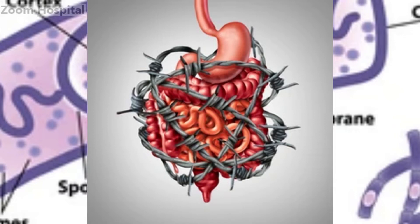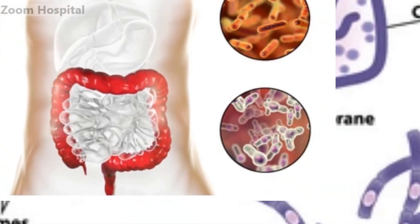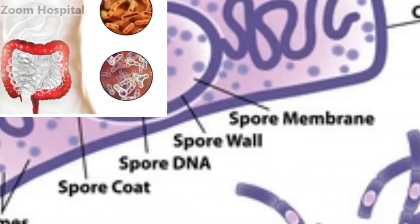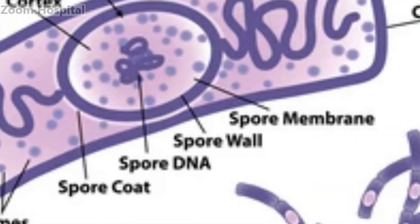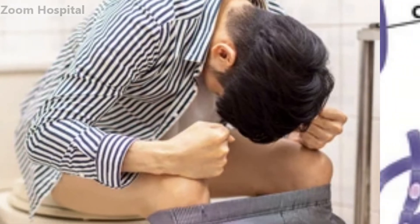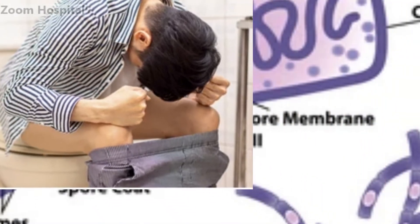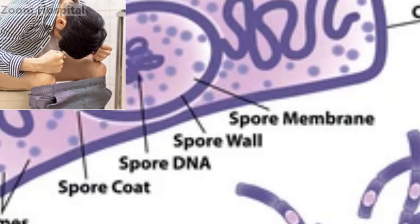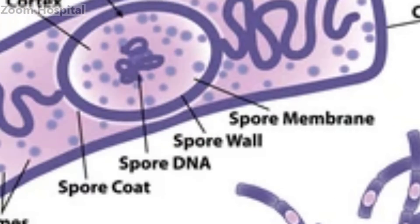3. Gastrointestinal anthrax. This form of anthrax occurs when contaminated meat is consumed. Symptoms may include abdominal pain, vomiting, bloody diarrhea, and fever. Gastrointestinal anthrax is rare but can be fatal if left untreated.